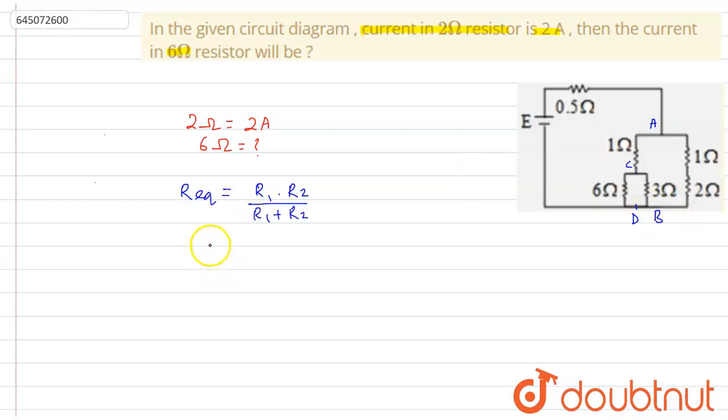So if I put the formula here, then what will be R equivalent? That will be equal to 6 into 3 divided by 6 plus 3. So that is equal to 18 by 9. That is equal to 2 ohm.